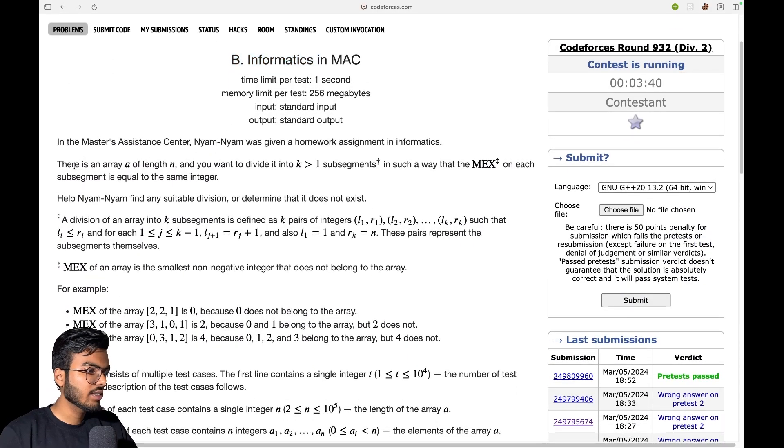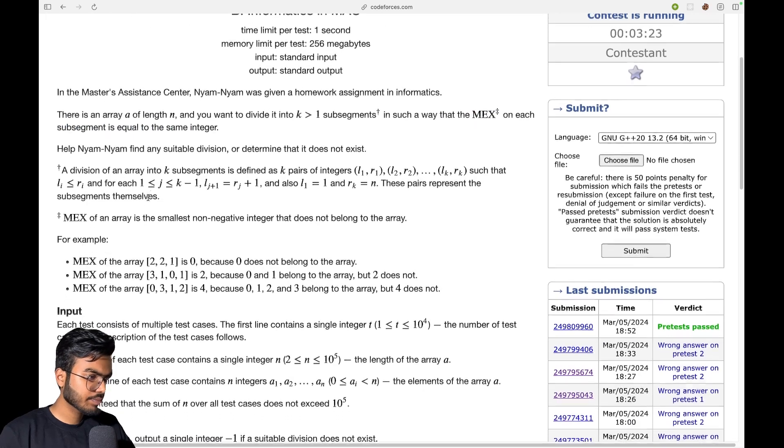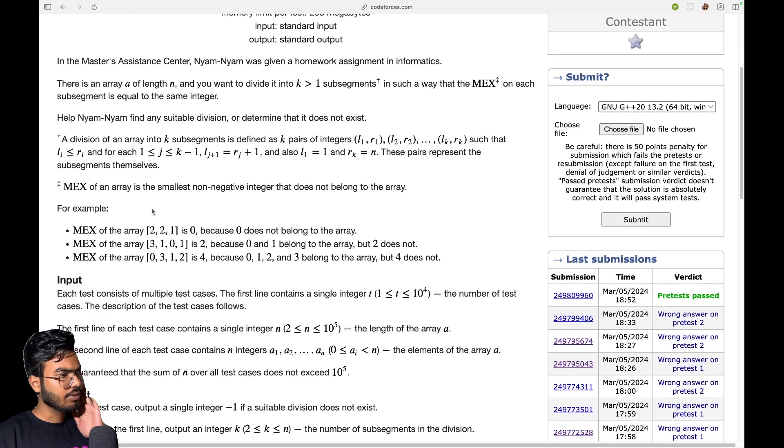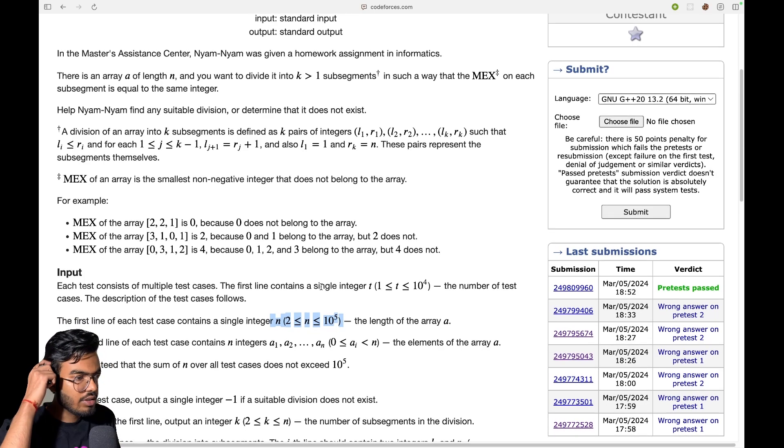Now this is the problem statement. There is an array A of length N and you want to divide this array into k subsegments, where k is not given to us, such that the MEX of each subsegment is equal to the same integer and k has to be greater than one. The division into k subsegments is defined as continuous subsegments, and N goes to 2 to the power of 5, so we have to solve this in Big O of N or N log N time.